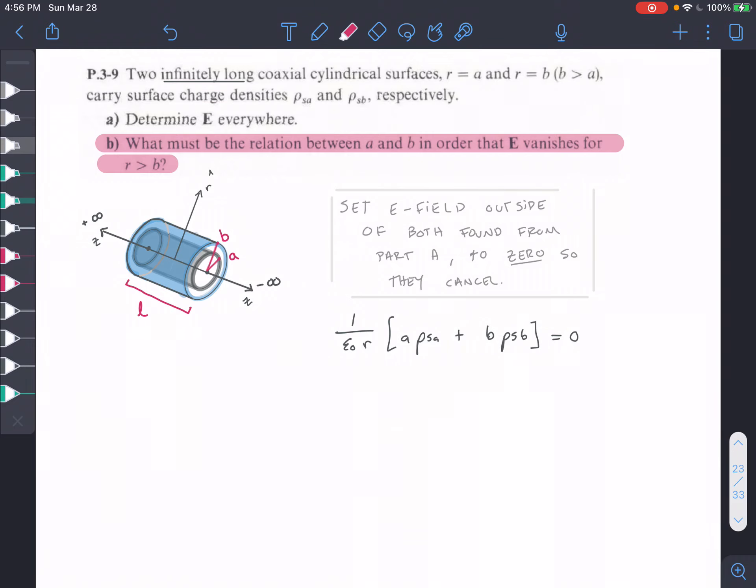Okay, so this is problem 3-9, part B. This question asks us to find a relationship between A and B.